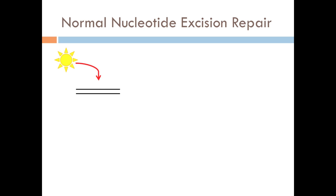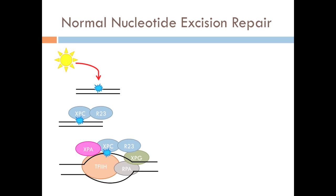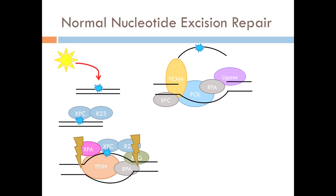Normally, when DNA is damaged by UV rays, the damaged region is recognized by proteins. Other proteins are then recruited to help unwind DNA and excise the damaged region. Once the damaged region is removed, polymerase repairs the DNA.